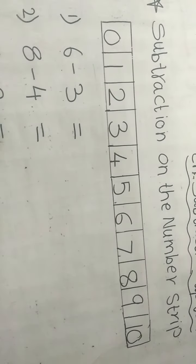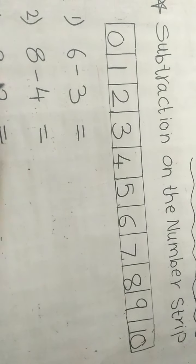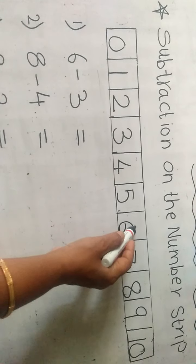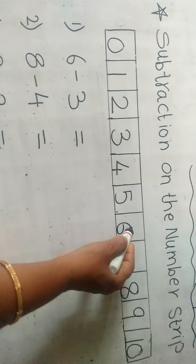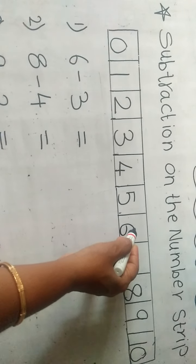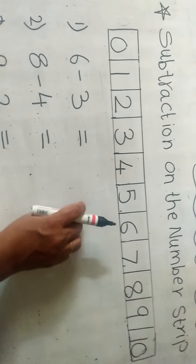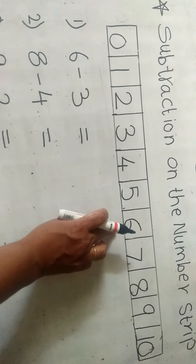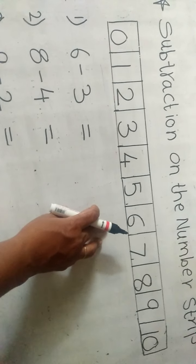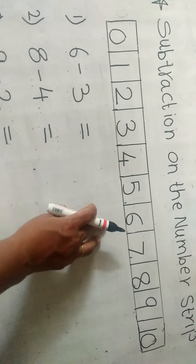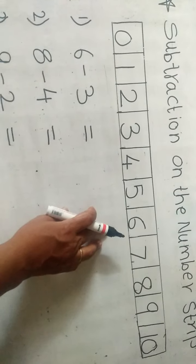Now we have to search number 6 on the number strip. Here is number 6. Now we have to start from here and go backwards. Listen children — in addition we are going forward when we do addition, and in subtraction we have to go backward.